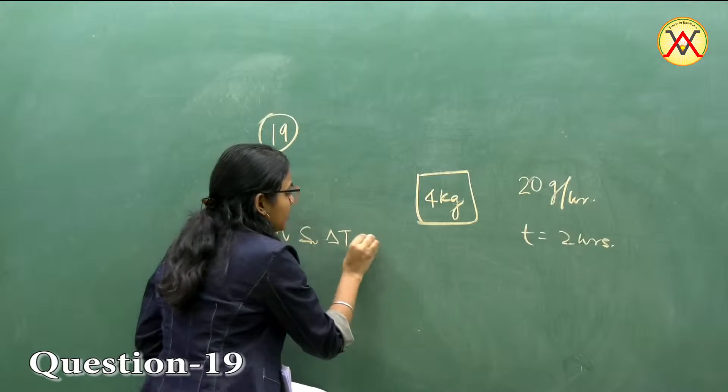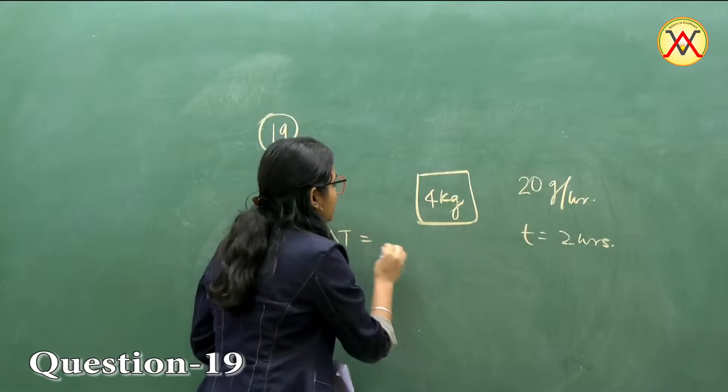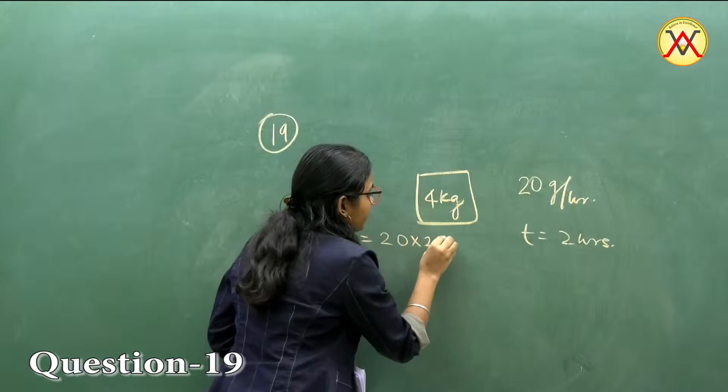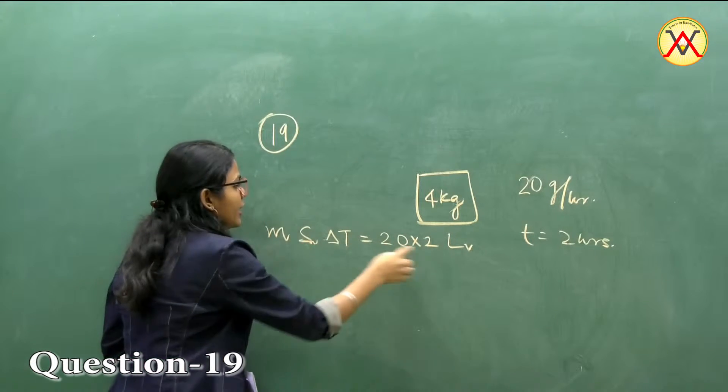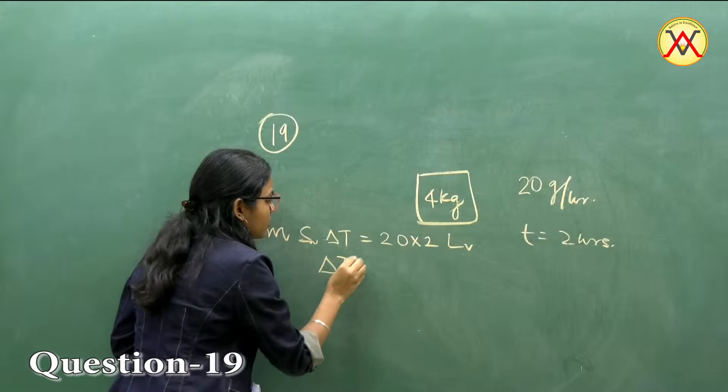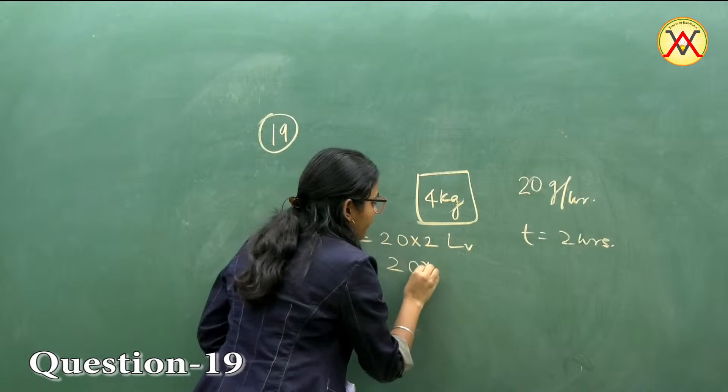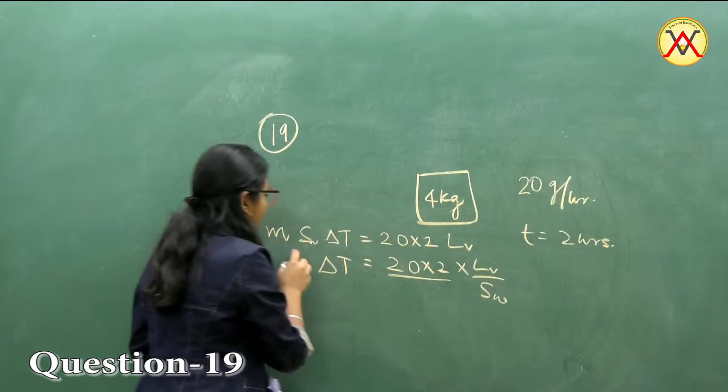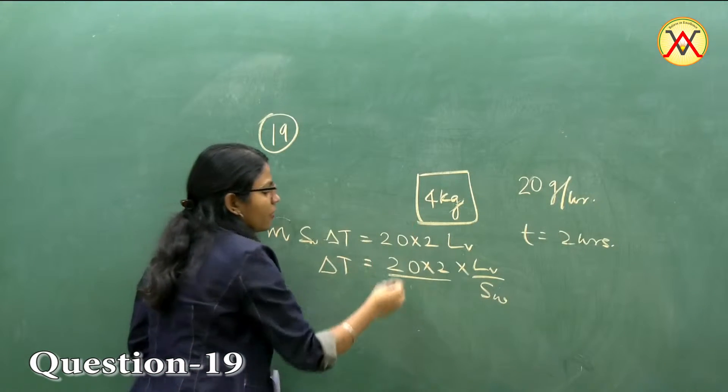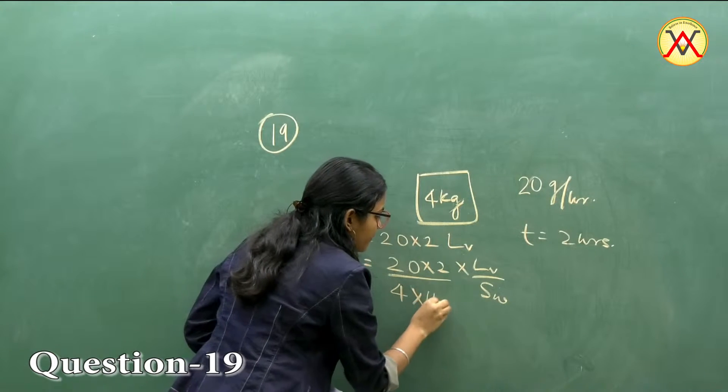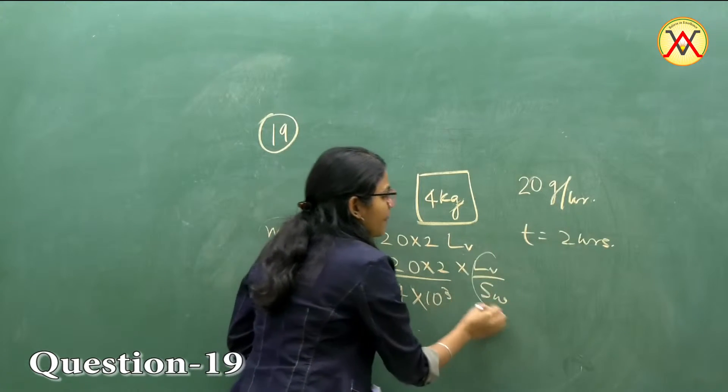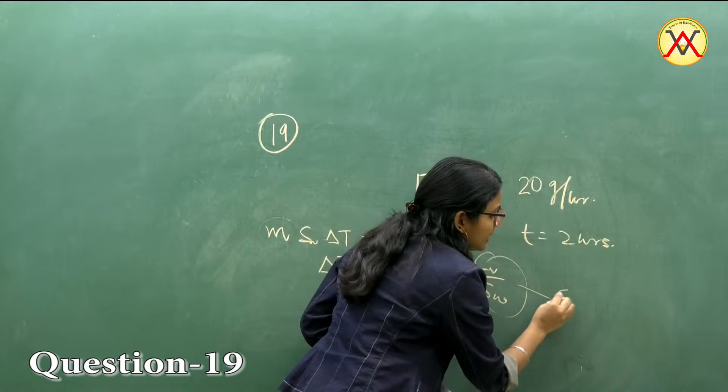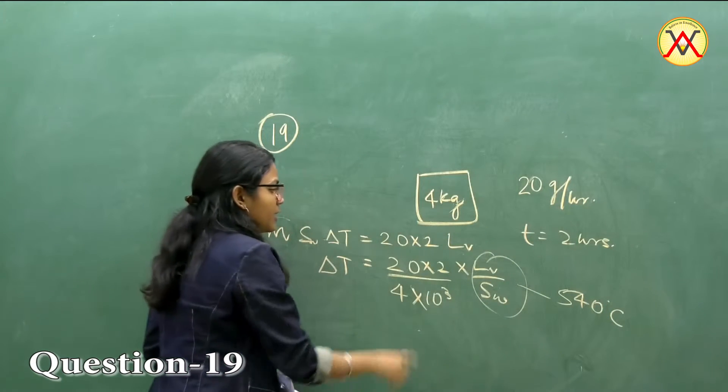ms·ΔT equals to m·Lv. We already have the value of Lv upon sw. The mass of water is 4 kg, and the Lv upon sw value given is 540 degree centigrade.